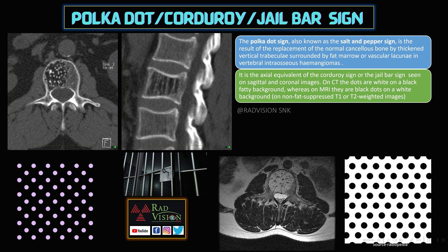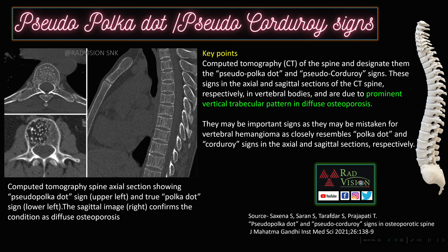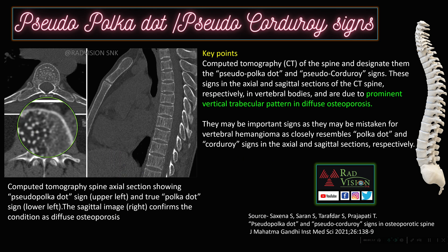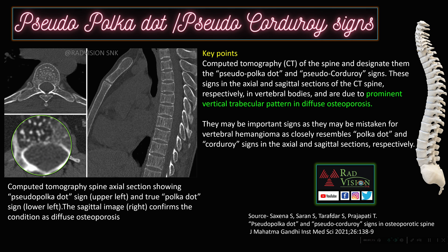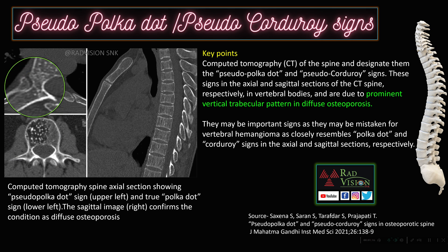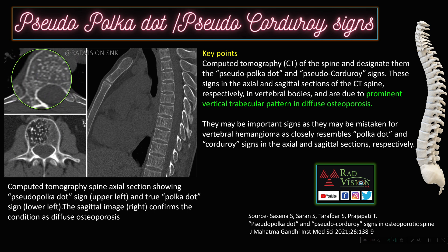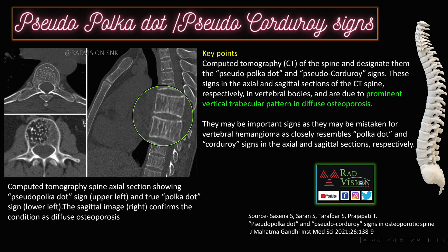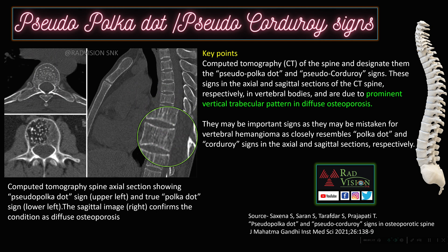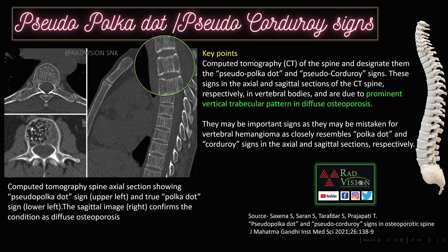Next, what is the pseudo-polka dot sign or pseudo-corduroy sign? We have already seen the typical polka dot sign in case of vertebral hemangioma, whereas the pseudo-polka dot sign is seen in case of diffuse osteoporosis, where prominent trabeculae in the osteoporotic spine mimic the polka dot appearance.